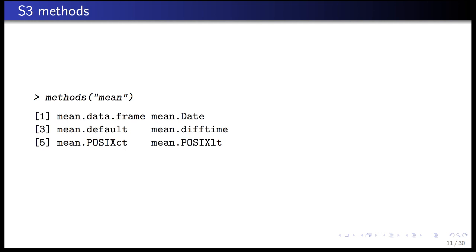To see what methods are available for a given S3 generic function, you can call the methods() function and give it the name of the generic. For mean, there are methods for data.frame, Date, default, difftime, POSIXct, and POSIXlt. The naming convention is generic.class — for example, mean.data.frame or mean.Date.